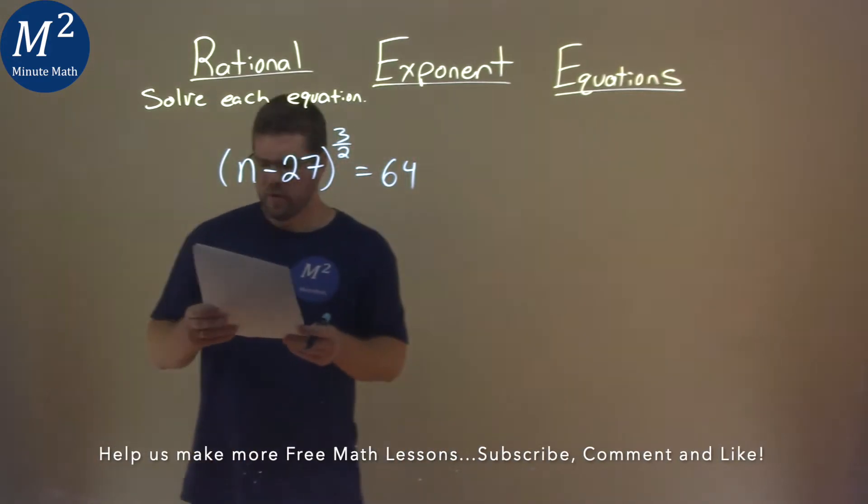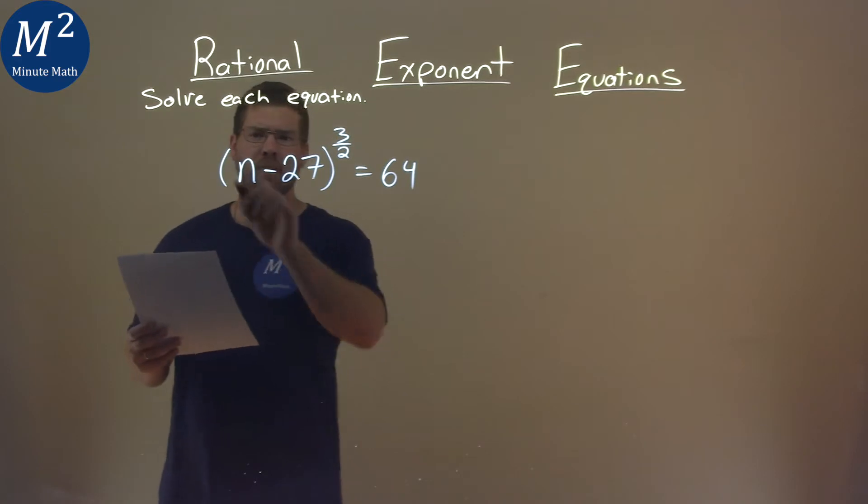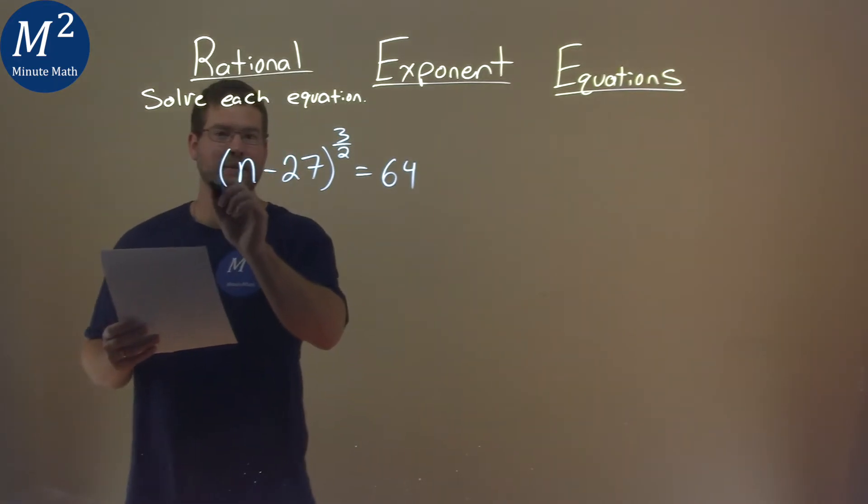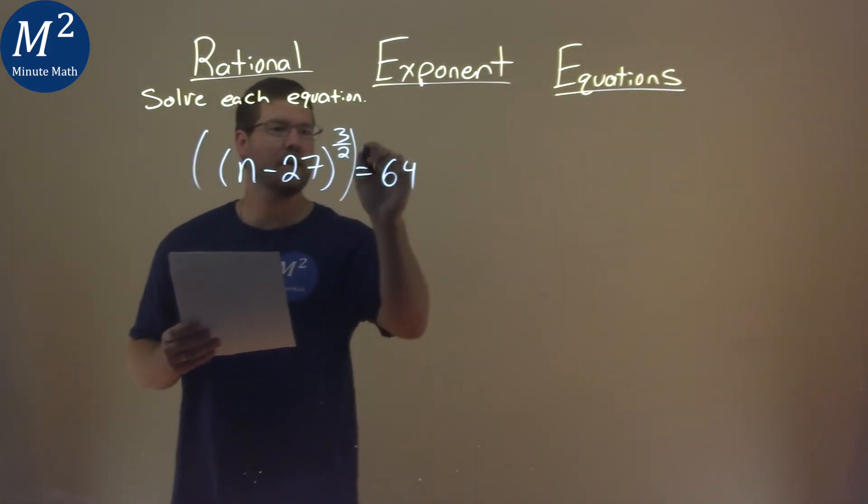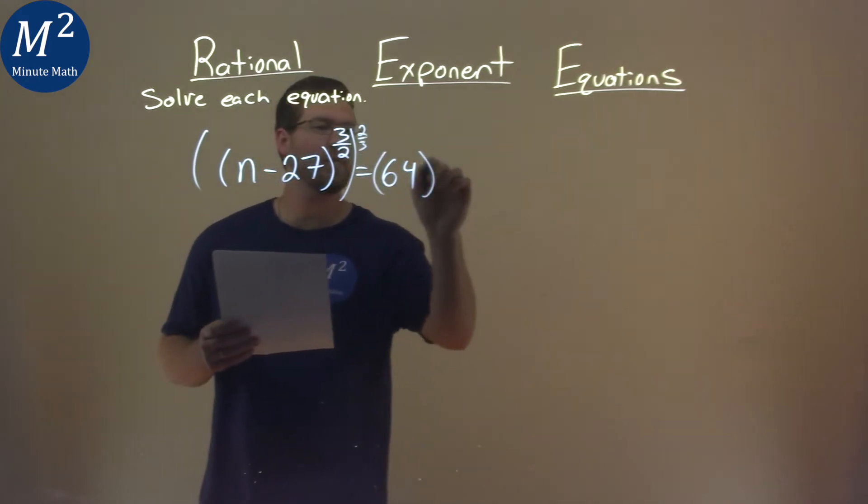Well, the first thing I want to do is get rid of this exponent. To do that, this is tricky here, we're going to take this whole thing and raise it to the two-thirds power. We've got to do it to both sides. What does this do?